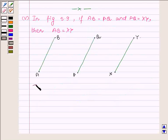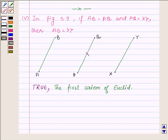This statement is true by Euclid's first axiom, which says things which are equal to the same thing are equal to one another. And here the line PQ is equal to line AB and XY also. Thus the line AB and XY are equal to each other, and we can say that the given statement is true by the first axiom of Euclid.